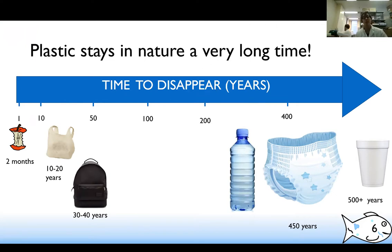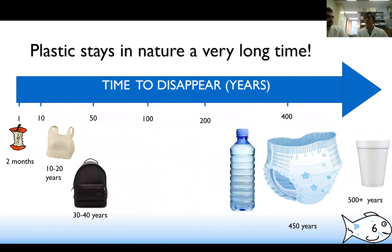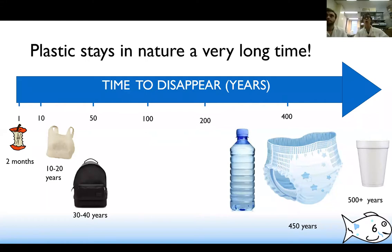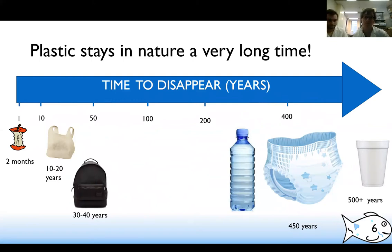If we compare plastic to food — like a banana peel, which takes about two months to degrade — plastic items can take between 20 years and 500 years to totally disappear from the environment, depending on what they are. So they remain behind for a very, very long time.